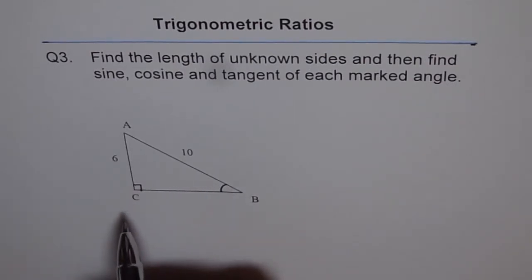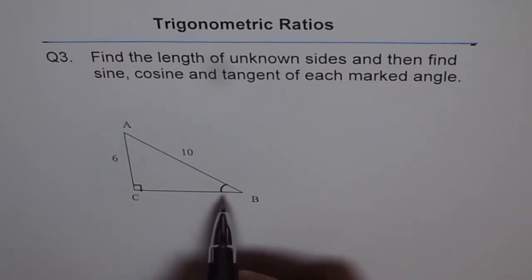This is the right triangle given to us where C is 90 degrees. Angle B is the marked angle for which you need to find sine, cosine and tangent.